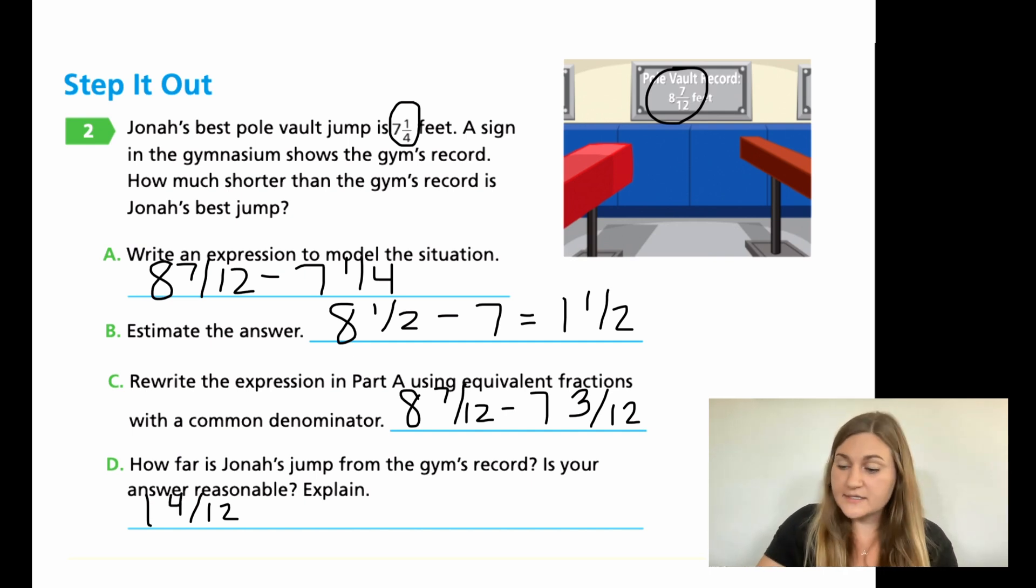If you wanted to simplify, this is equal to 1 and 1/3, because 4 is a third of 12. Or if you divided each by 4, 4 divided by 4 is 1, and 12 divided by 4 is 3. So that is my simplified answer.